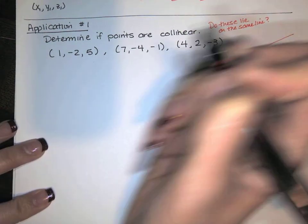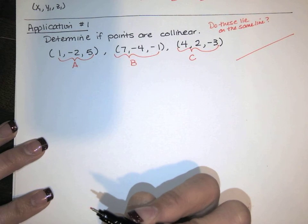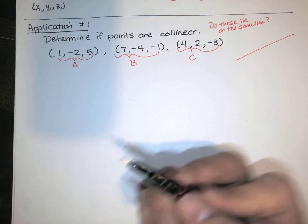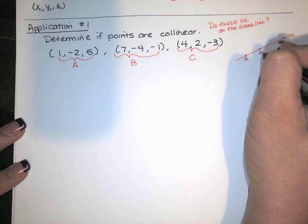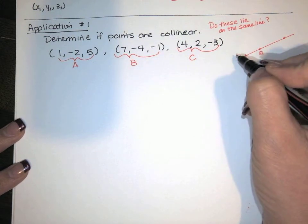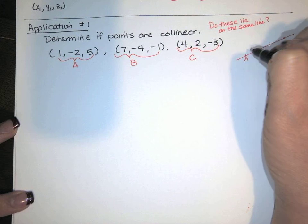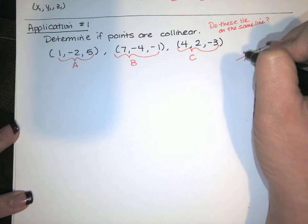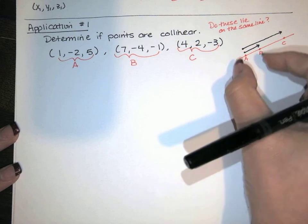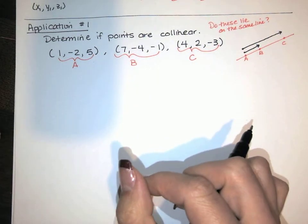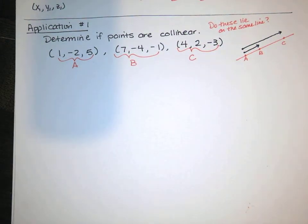So let's imagine you've got three points. I'm going to call this point A, this point B, and this point C. I want to know if all these guys are on the same line. If they are on the same line, they're not necessarily the same distance apart — maybe A is over here, B is over here, and C could be in between them or somewhere else. Isn't it true that if A, B, and C all lie on the same line, vector AB and vector AC would have to be constant multiples of each other? Those vectors would have to be parallel, meaning AB is just a constant multiple of AC.